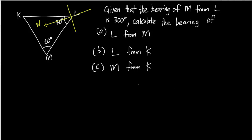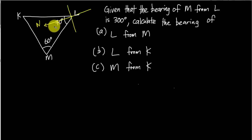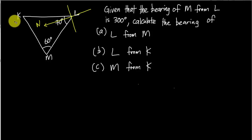Given that the bearing of M from L is 300°, calculate the bearing of L from M. So basically you will see a diagram here. What's difficult about this question is the direction of the north, because the north is facing a certain direction. What I would do first for this kind of question is add the north for L and for M also. So I add a north here.